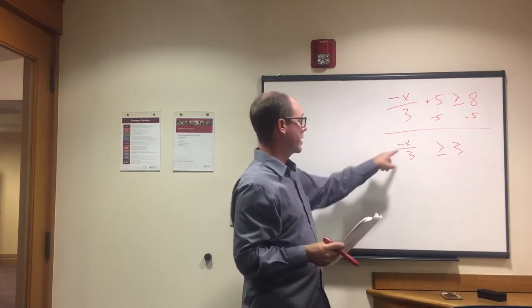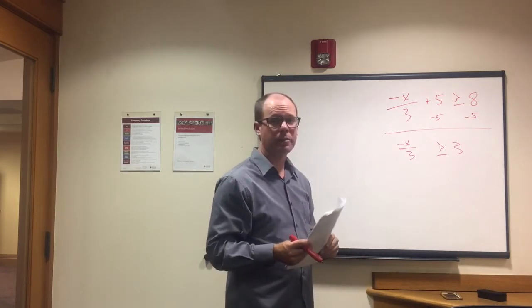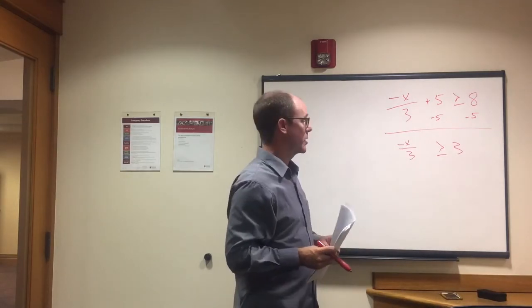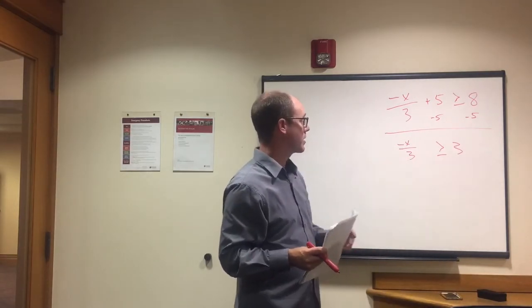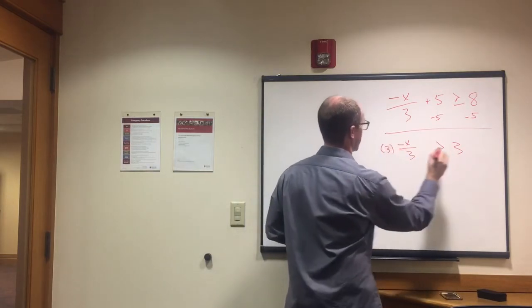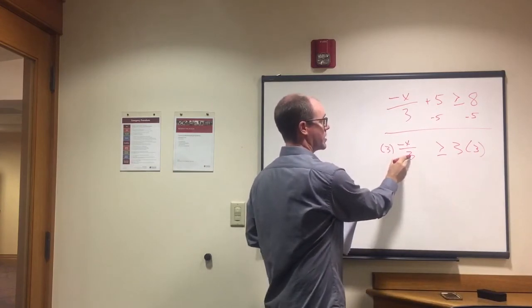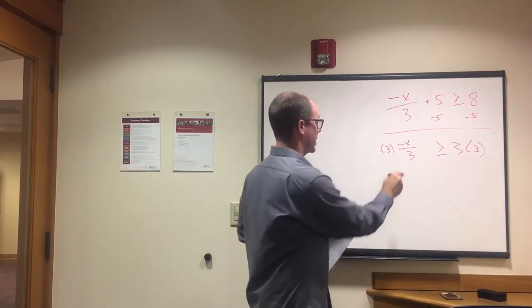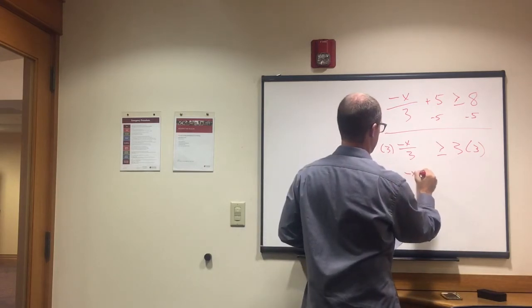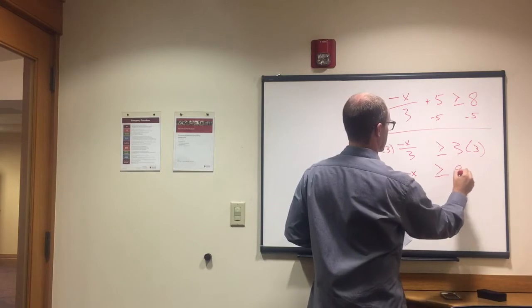So now when we have a variable on top and then we have this number in the denominator, if we multiply both sides by the denominator, that will eliminate this 3, right? So -x/3, we multiply each side by 3 because this 3 is in the denominator. If we do that, that will eliminate the 3. And we just have -x ≥ 9.